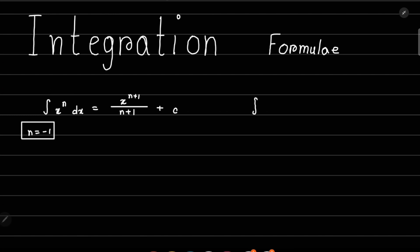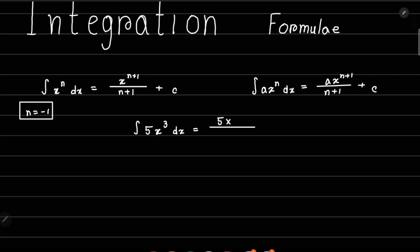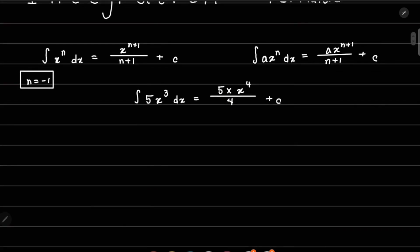The same integration can come in a different form with a constant in front: a times x to the power n dx, where a is a constant value such as 3, 4, or 3.5. The result is a times x to the power n plus 1 divided by n plus 1, plus C. For example, integrating 5x³ dx gives 5 times x to the power 4 divided by 4, plus C.